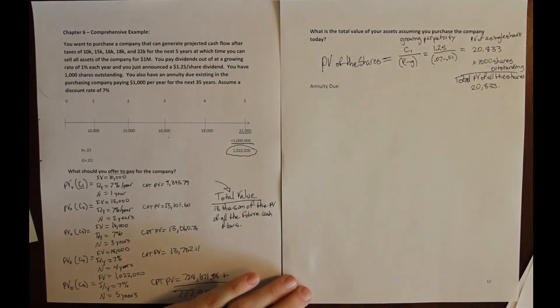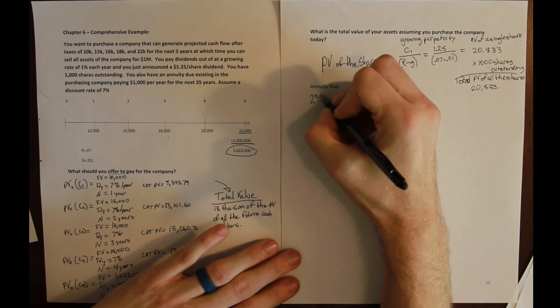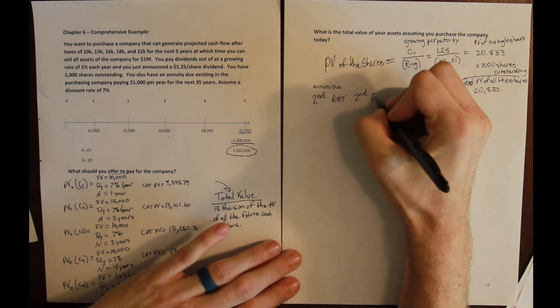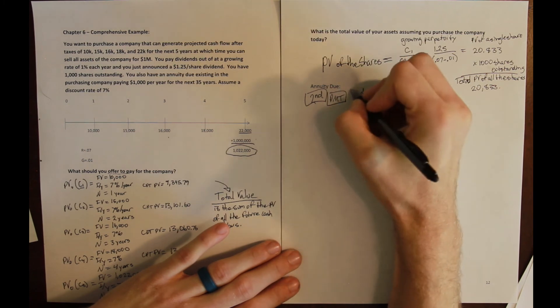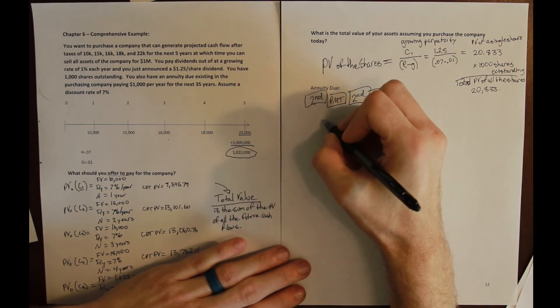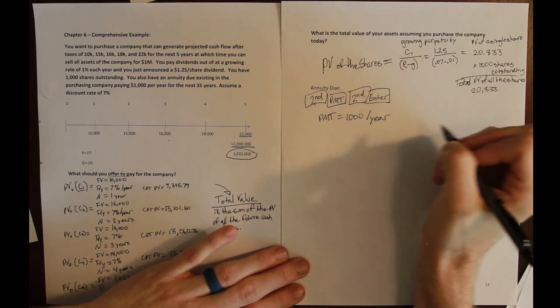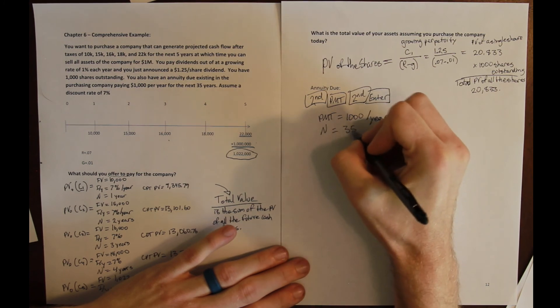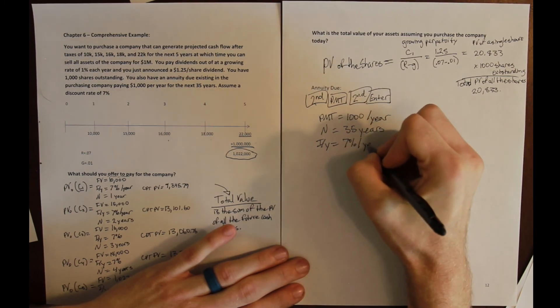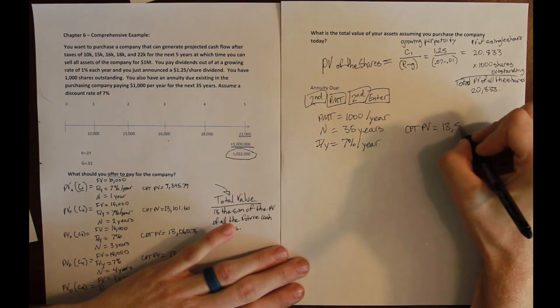And then the final asset, the final set of cash flows that we have is an annuity due. And to solve for an annuity due, the first thing we do is change our payments to be at the beginning of the period. So we press second, payment, second, enter. And we convert to beginning payments. And then we plug everything in just like any other annuity. We are told there is a payment that we receive, so that's a cash inflow of $1,000 per year. We receive that payment every year for 35 years. IY is our discount rate, just like for everything else, 7% per year. And we compute our present value of this annuity due and get $13,854.